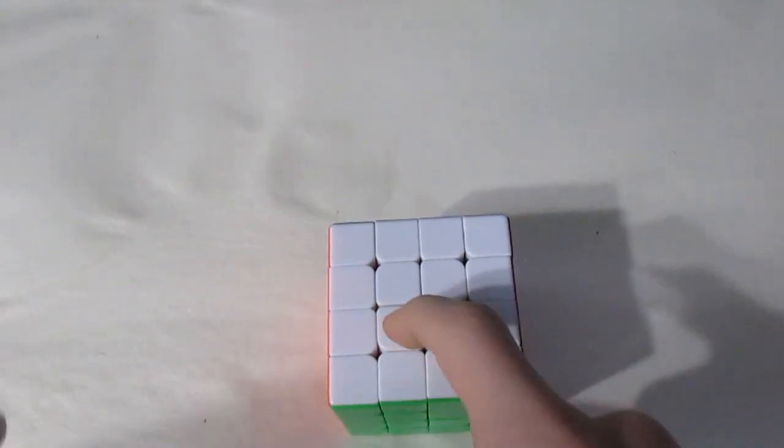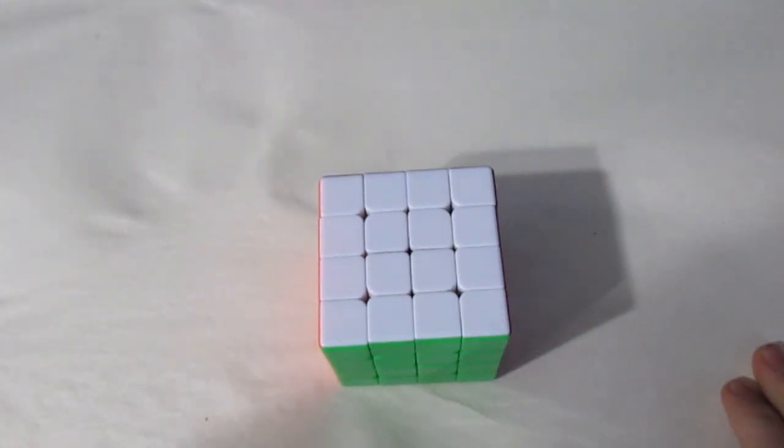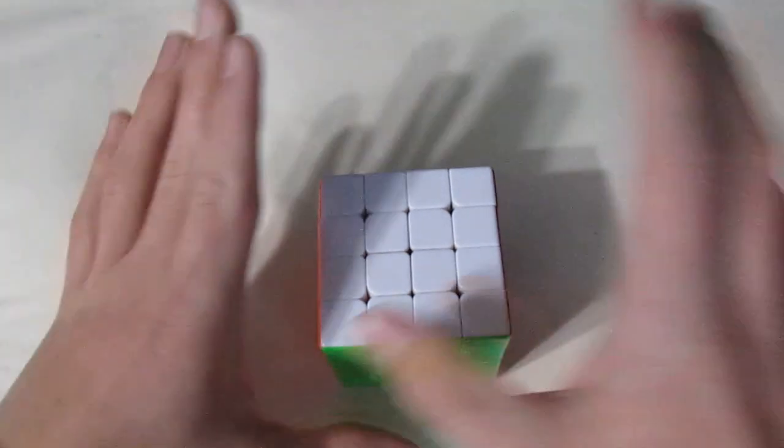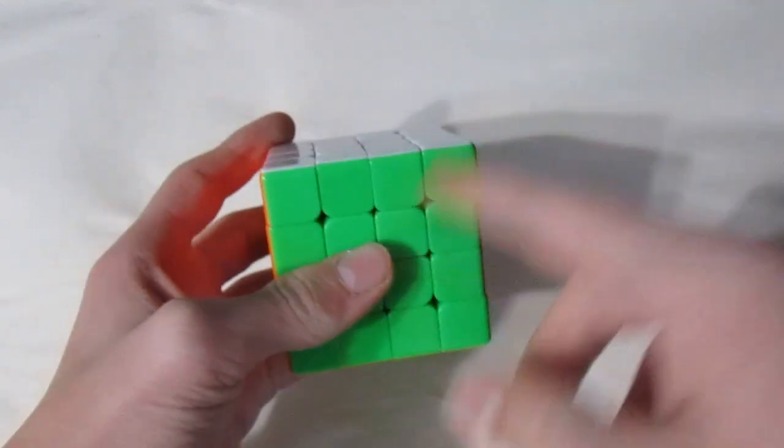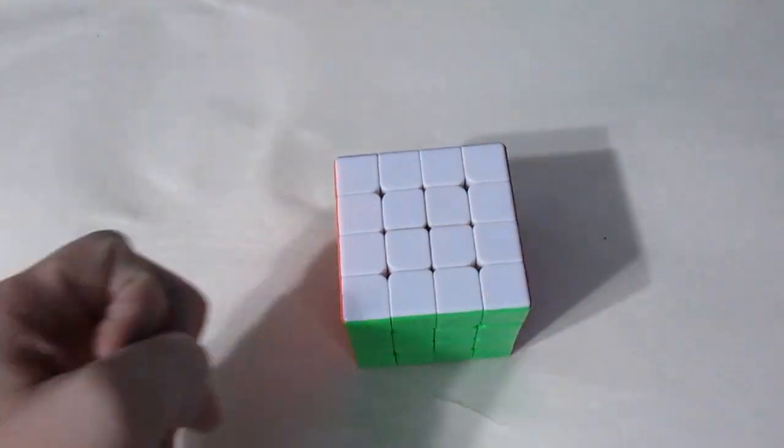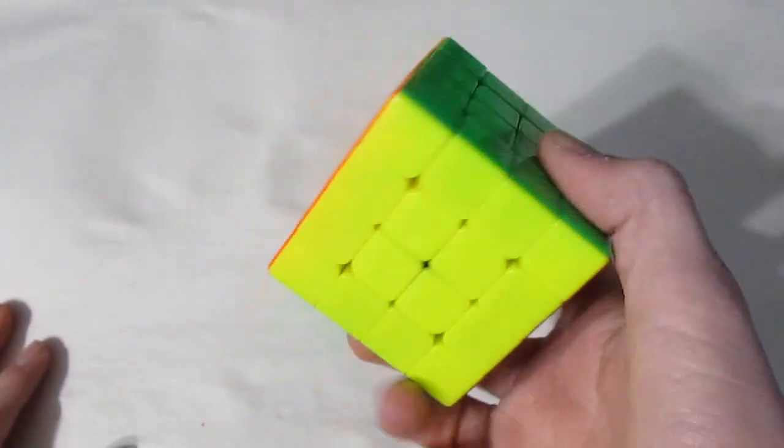Technically the last of the big NxN events—I don't think 3x3 OH counts as an NxN event. For 4x4, I'm using the QiYi WuQue M. I'm hoping for just a sub-55 average and a sub-50 single.